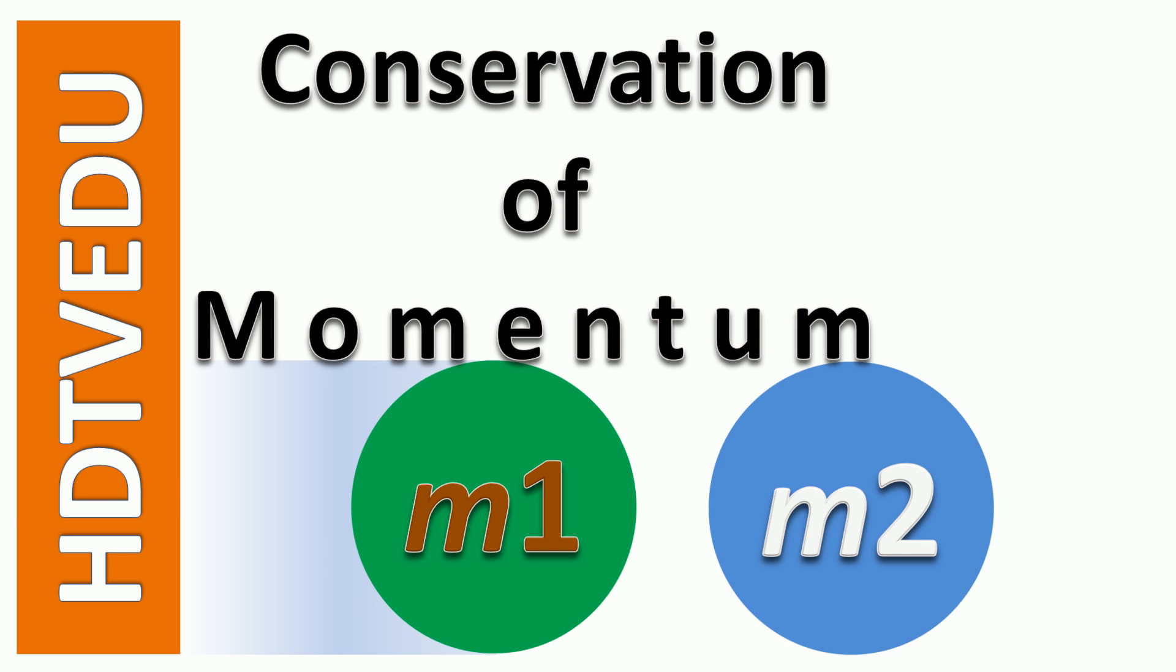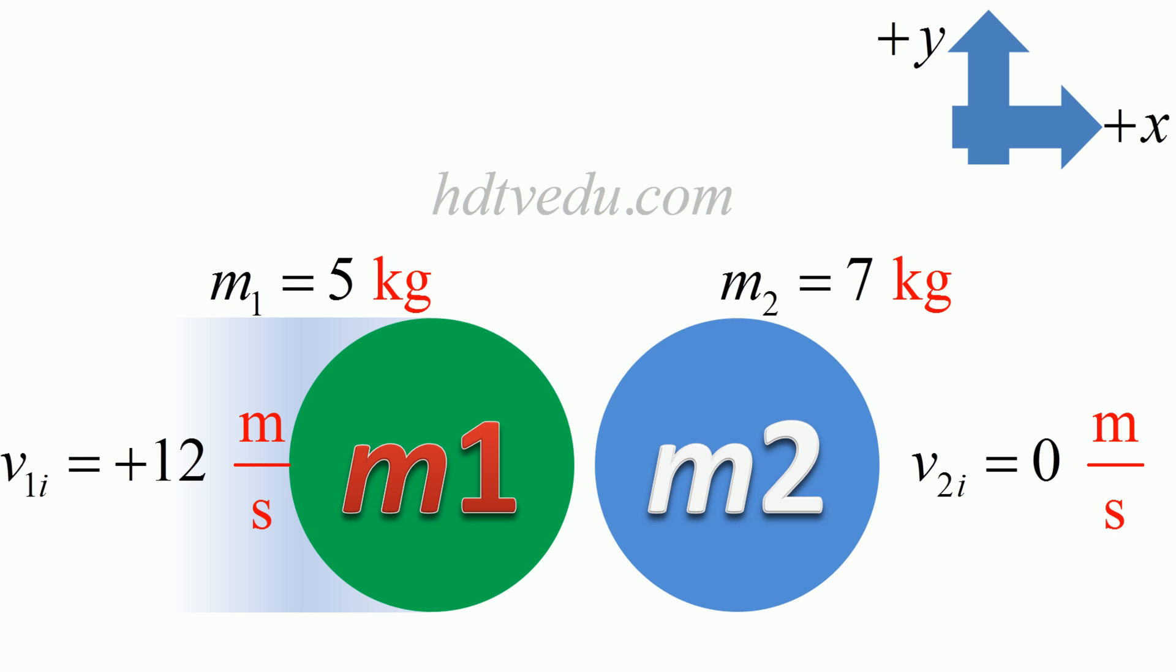Conservation of momentum: we have m1 equal to 5 kg, moving to the right at 12 meters per second. We have m2, 7 kg, and it is at rest, so its velocity is zero.